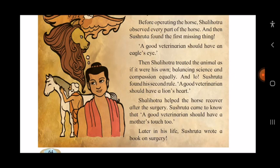So Sushruta found all three things he was missing. Later in his life, Sushruta wrote a book on surgery. Surgery means medical treatment that involves cutting or opening a body part and removing or correcting something. In this case, it was the surgery of a horse.